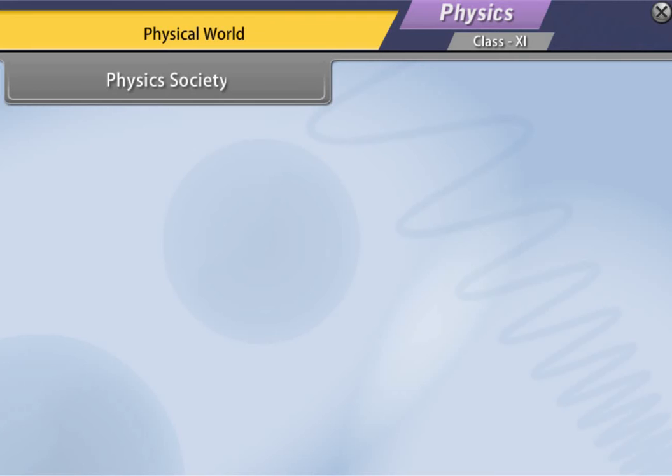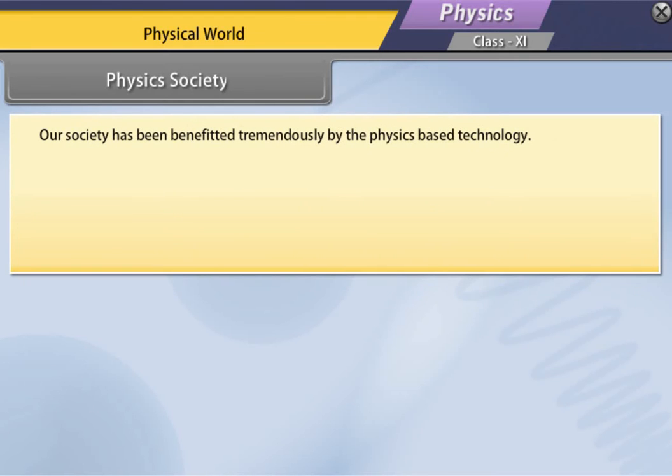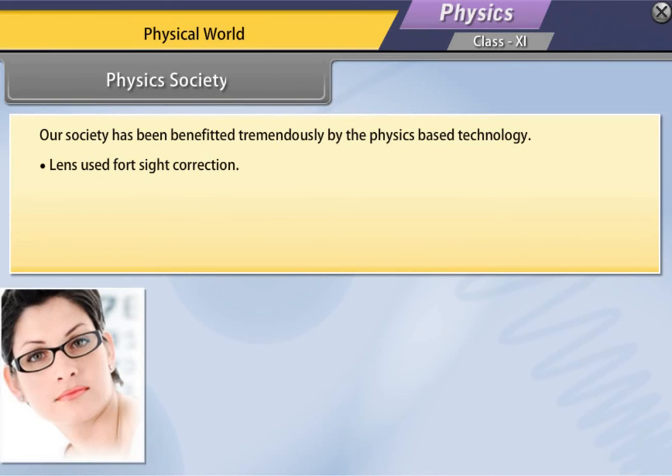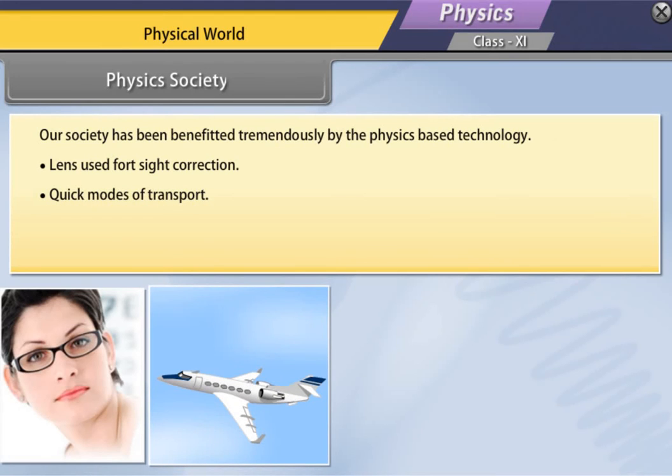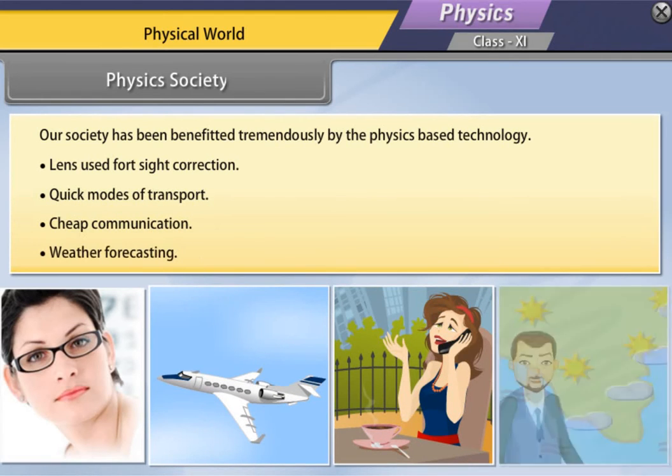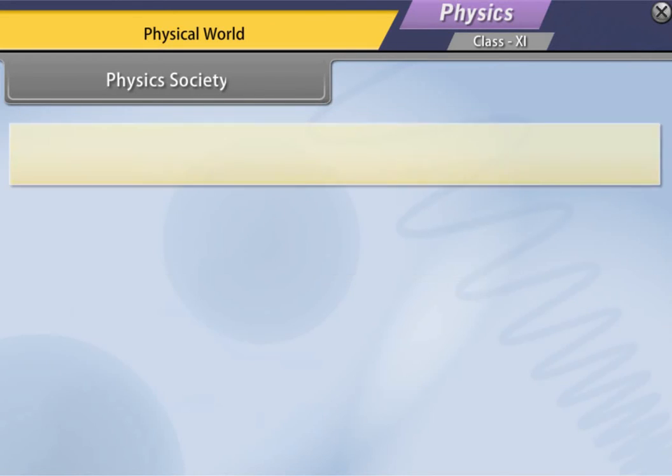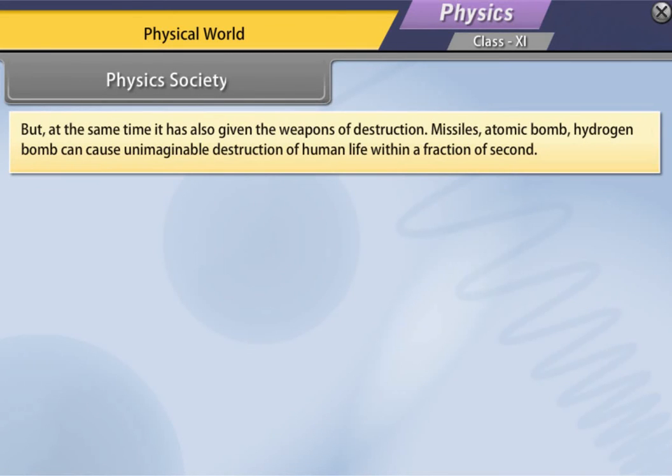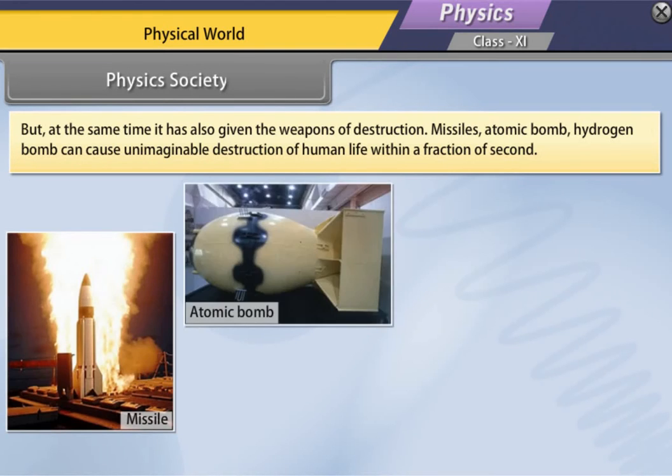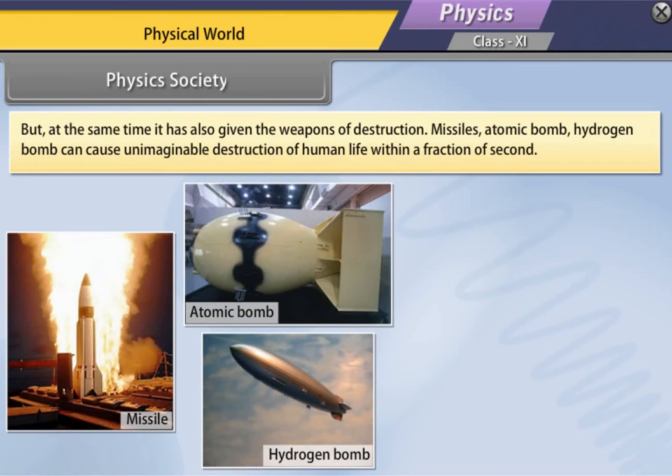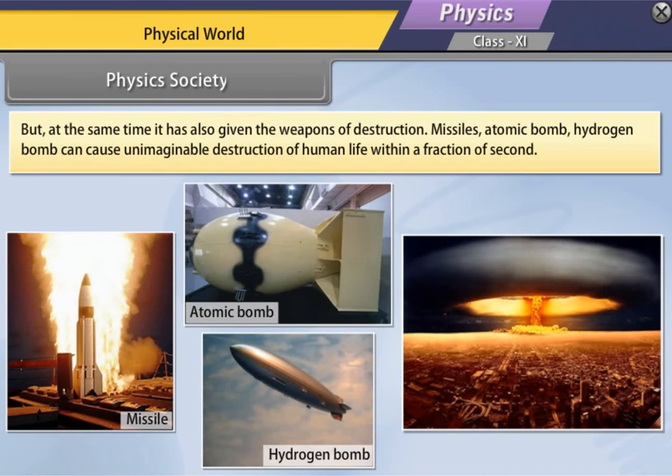Physics society. Our society has been benefited tremendously by the physics based technology. Lens used for sight correction, quick modes of transport, cheap communication, weather forecasting are some new dimensions of progress due to physics. But at the same time it has also given the weapons of destruction. Missiles, atomic bomb, hydrogen bomb can cause unimaginable destruction of human life within a fraction of second.